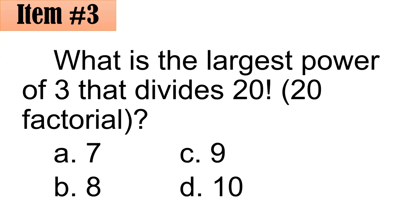Number three. What is the largest power of 3 that divides 20 factorial? 20 factorial means 20 times 19 times 18 times 17 all the way until 3 times 2 times 1. It is the product of all natural numbers from 1 until 20. Is it A, 7, B, 8, C, 9, or D, 10? Letter D daw, 10, sabi ni Ma'am.